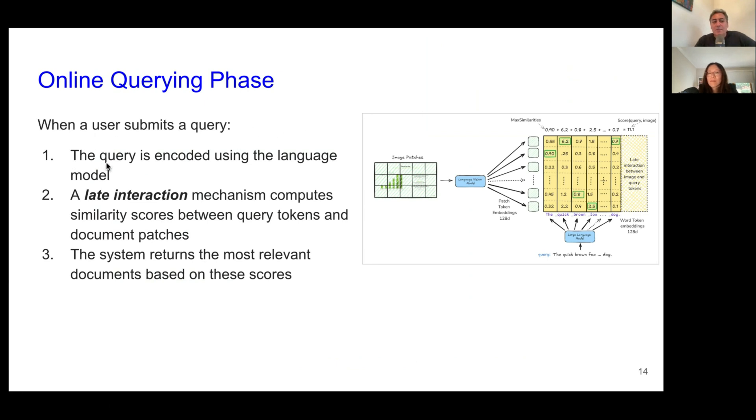All right. So when we pass all the patches through this process and we end up with the final embeddings, we store them in some kind of data store. And now we repeat this for all the PDF pages of the entire corpus. After that, when user asks a question, then we pass the query. The query is encoded using the language model. So we convert it into embedding. And then we do a late interaction process in this case, to find the similarities between the query tokens and the document patches. So let me show you in this picture here, this is my document page, and these are the patches. And this is the user query here. So here we have, if it has six words, then we will have six different vectors. For each word, we will have one embedding, one vector.